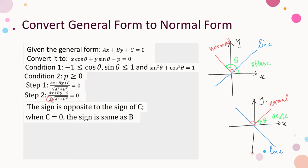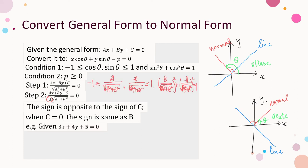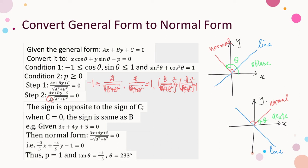Consider an example: given the general form 3x + 4y + 5 = 0, we convert to normal form. Dividing by −√(3² + 4²) = −5, we obtain the normal form. Thus p = 1 and tan θ = −4/−3. So θ is an angle in the third quadrant. From a calculator, we find θ ≈ 233°.